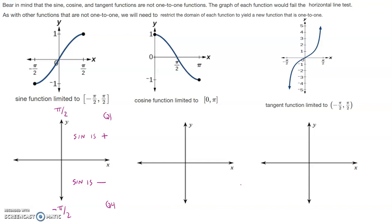Let's take a look at our cosine function. We are limited to zero to pi, so when we're working with our cosine function and its inverse we're going to be restricted to quadrant 1 or quadrant 2. Keep in mind that cosine is positive in quadrant 1, and in quadrant 2 cosine is negative.